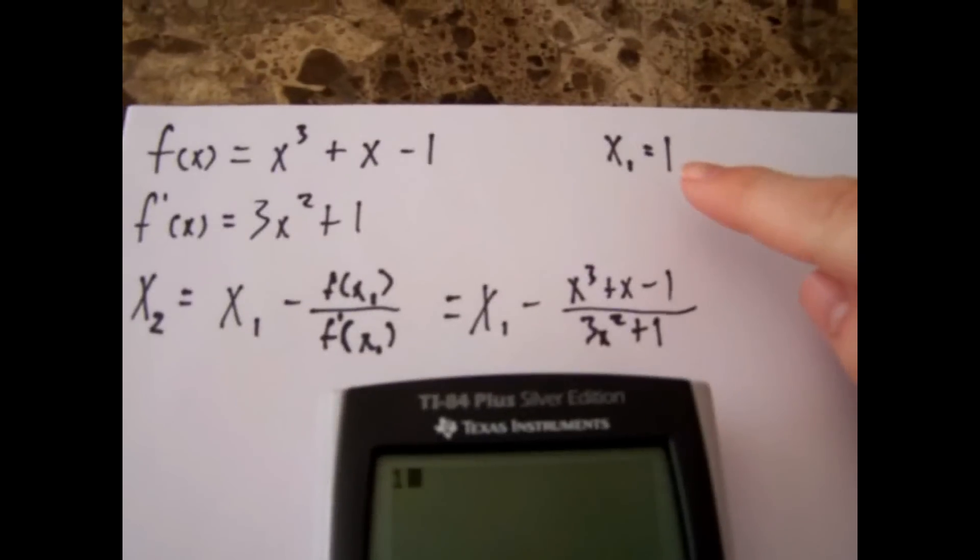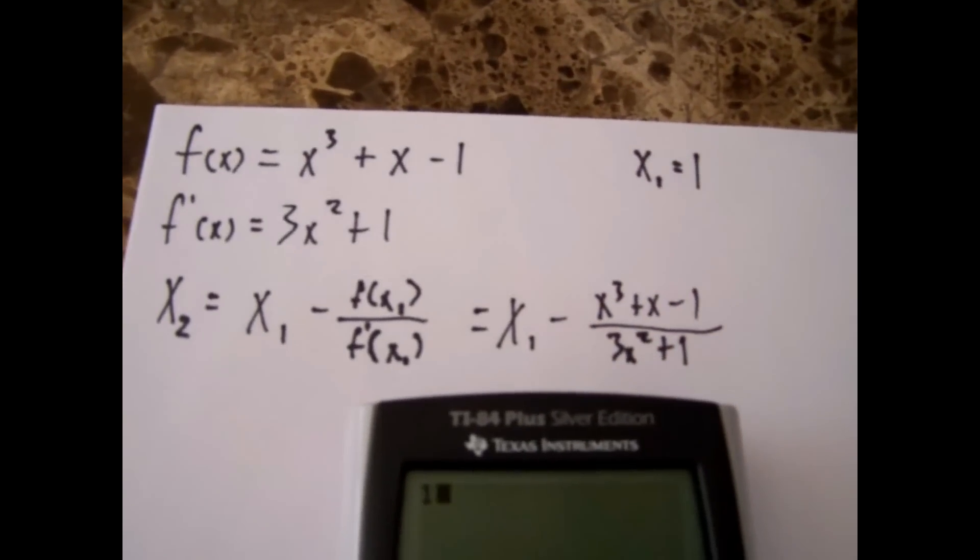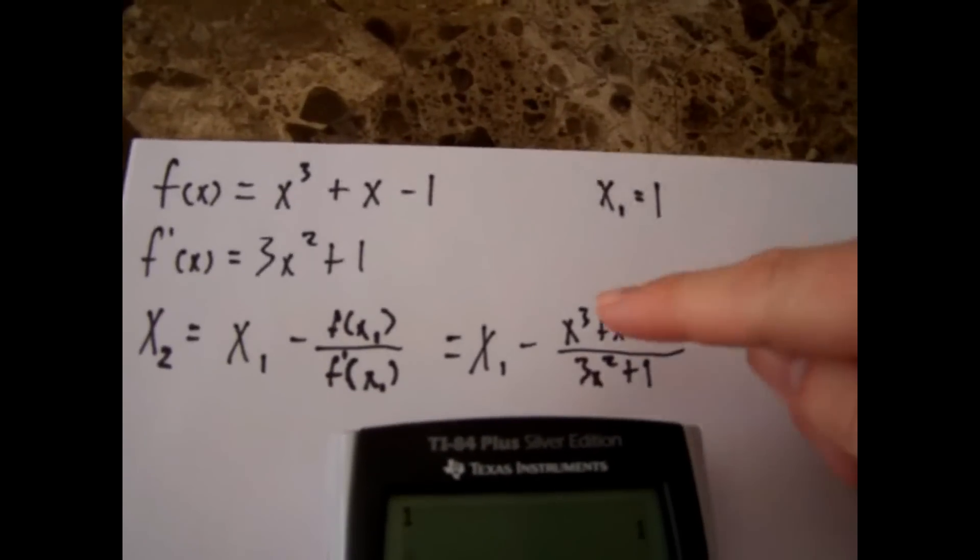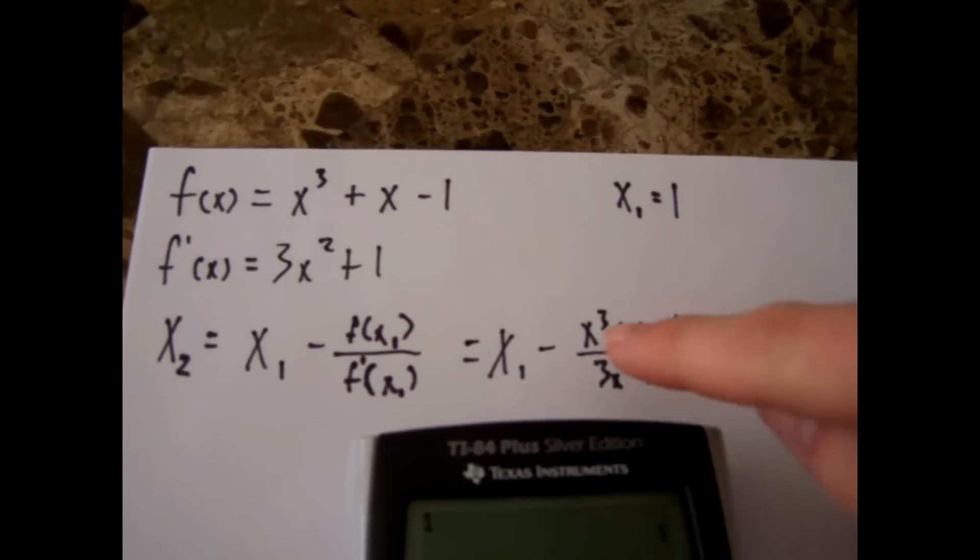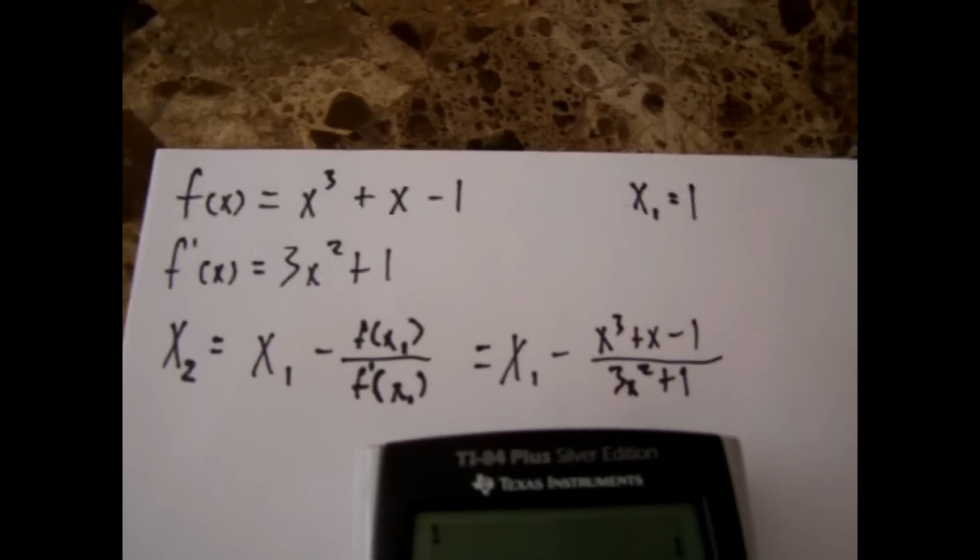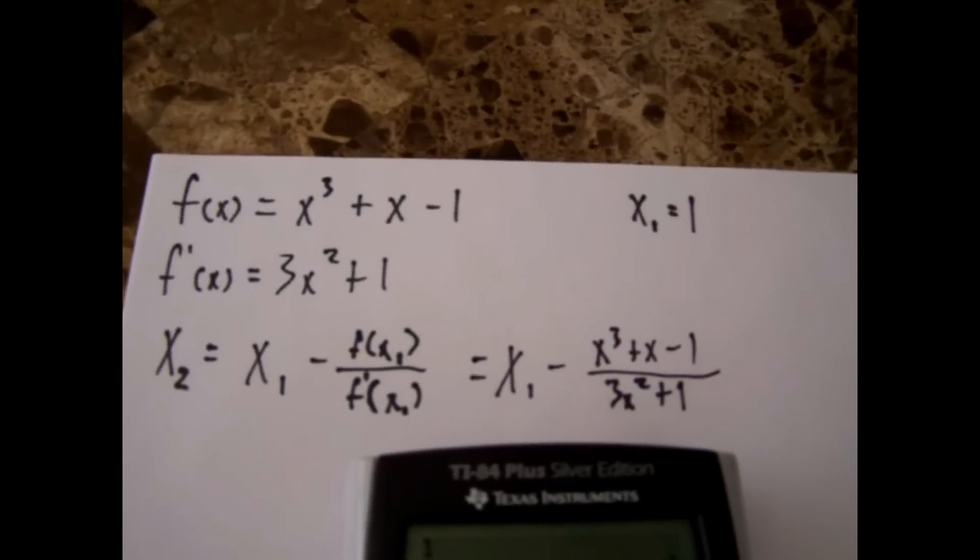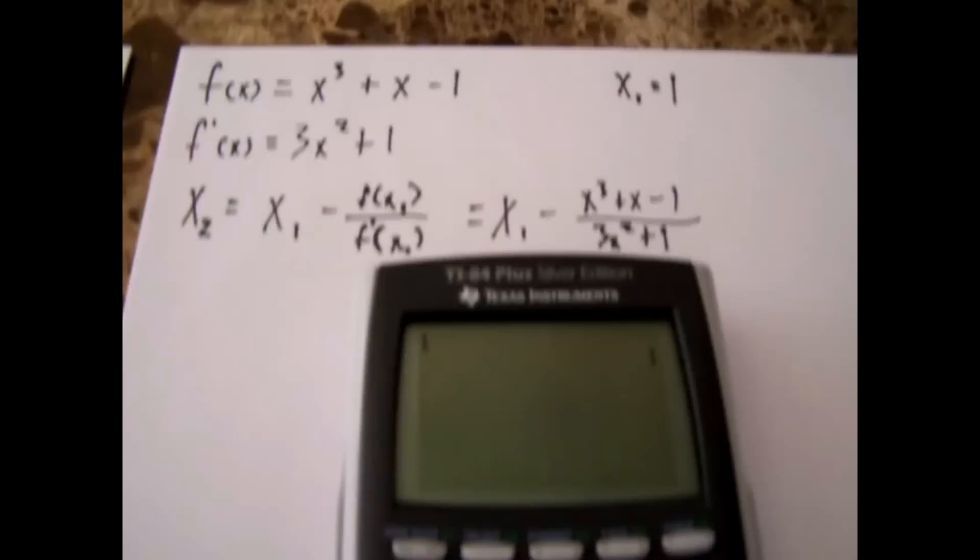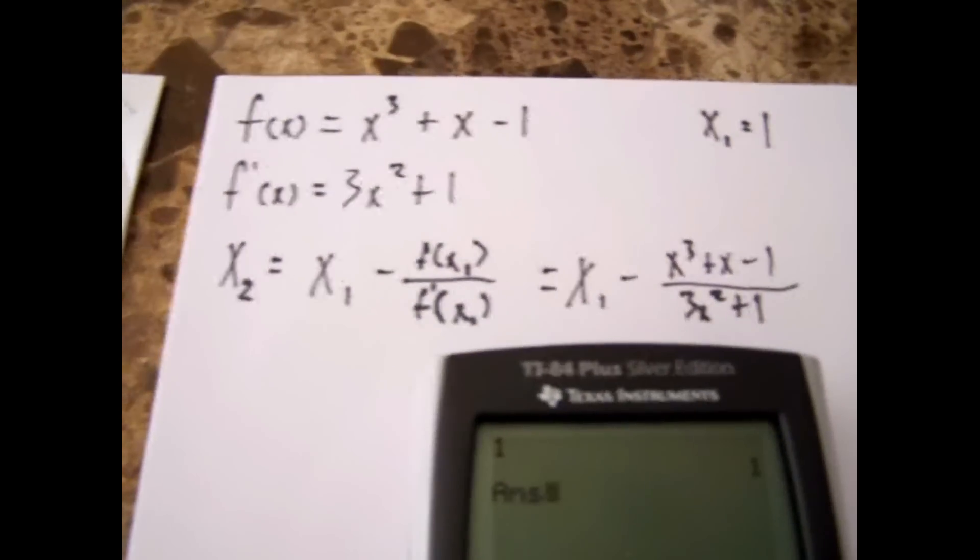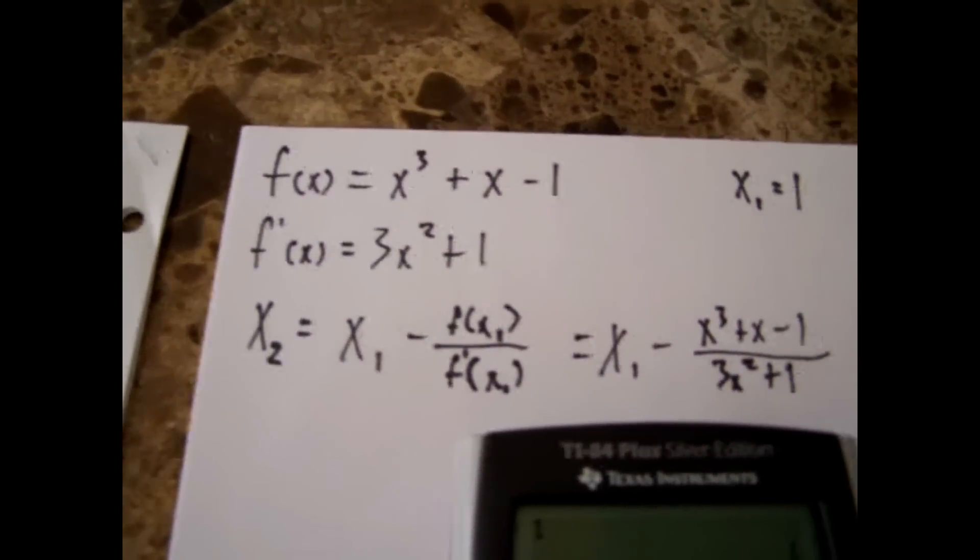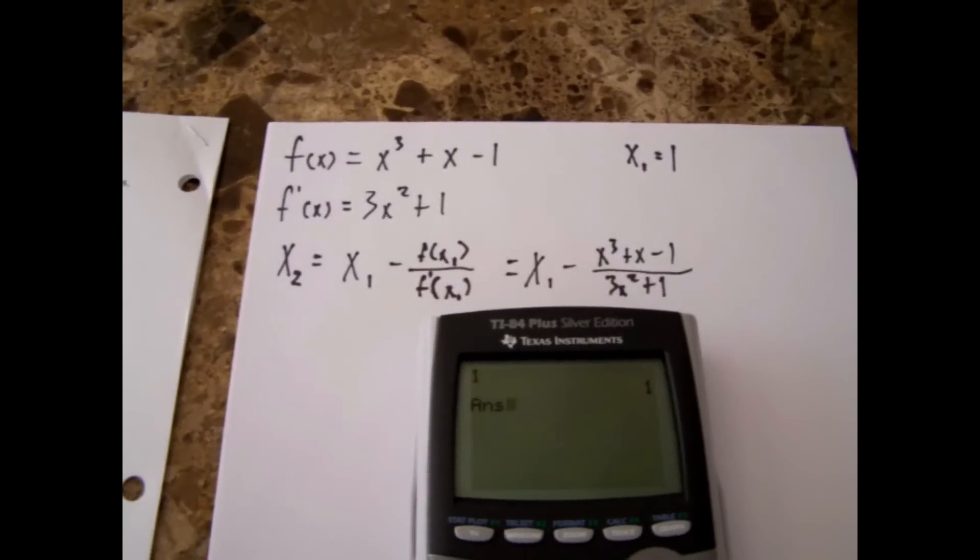Alright for the function, first you want to plug in your x₁, your initial guess, as one. Now for this what you want to do is for x₁ it's going to be your answer. As well as every x in here should be that one. So instead of pressing one you can hit second and then answer, and then use that instead of your one. It'll make sense why in a minute.